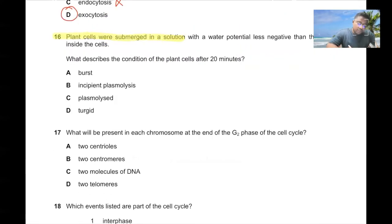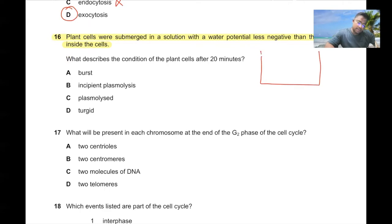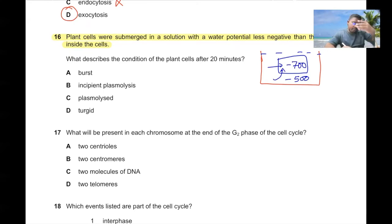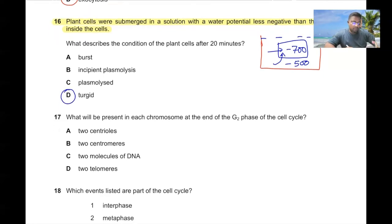Question number sixteen. Plant cells are submerged in a solution with a water potential less negative than that found inside the cells — for example, minus 500 outside and minus 700 inside. Water will move into the cell. After 20 minutes the cells will be turgid. 16D is the correct answer.